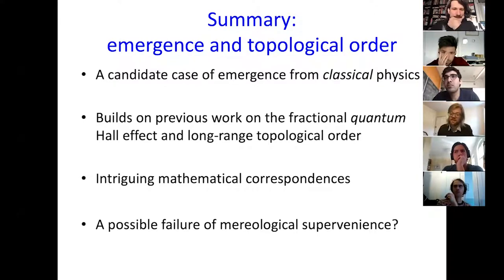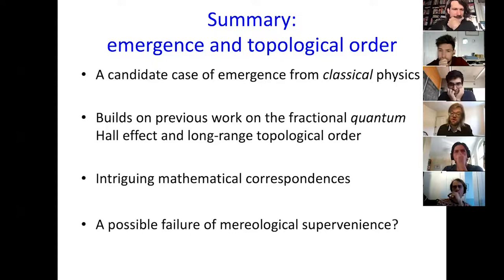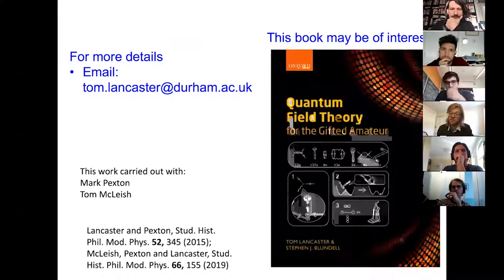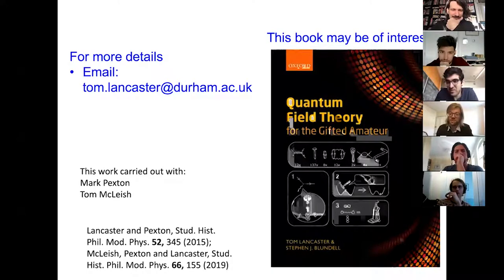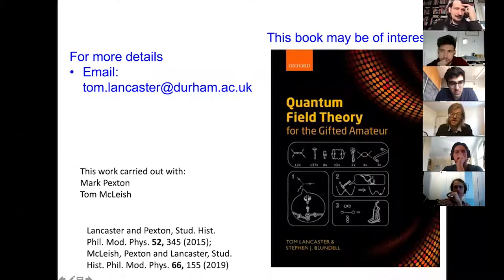Not only is there an intriguing mathematical correspondence between this very classical and very quantum mechanical piece of physics, but I'm going to try to spell out how we might understand the possibility of emergence in those cases. The physics I'll discuss has a background in quantum field theory. The important references are two papers: a 2015 paper by Mark Paxton and me on the fractional quantum Hall effect and emergence, and a later paper led by Tom McLeish at York University on the classical case.